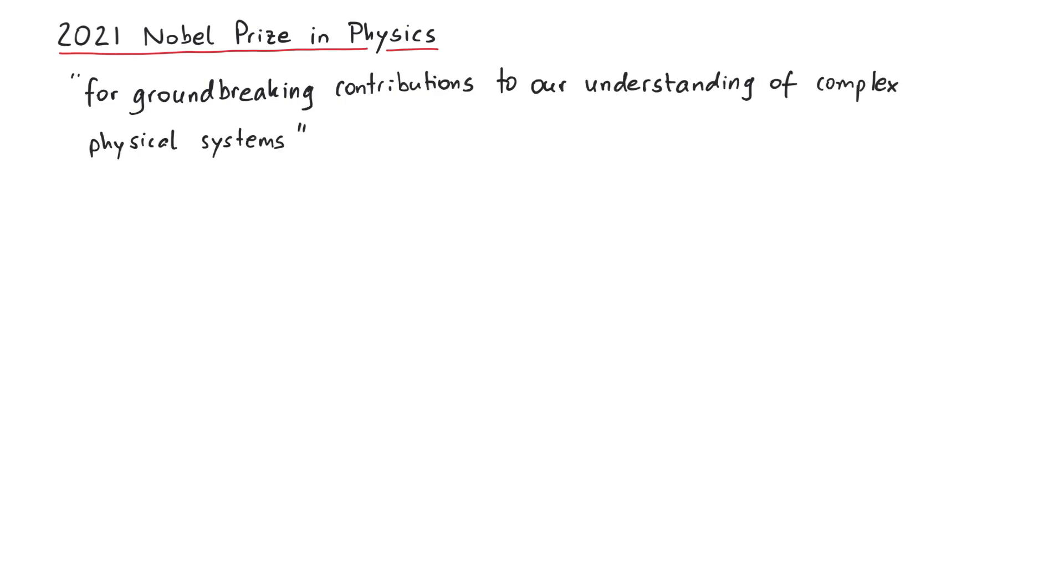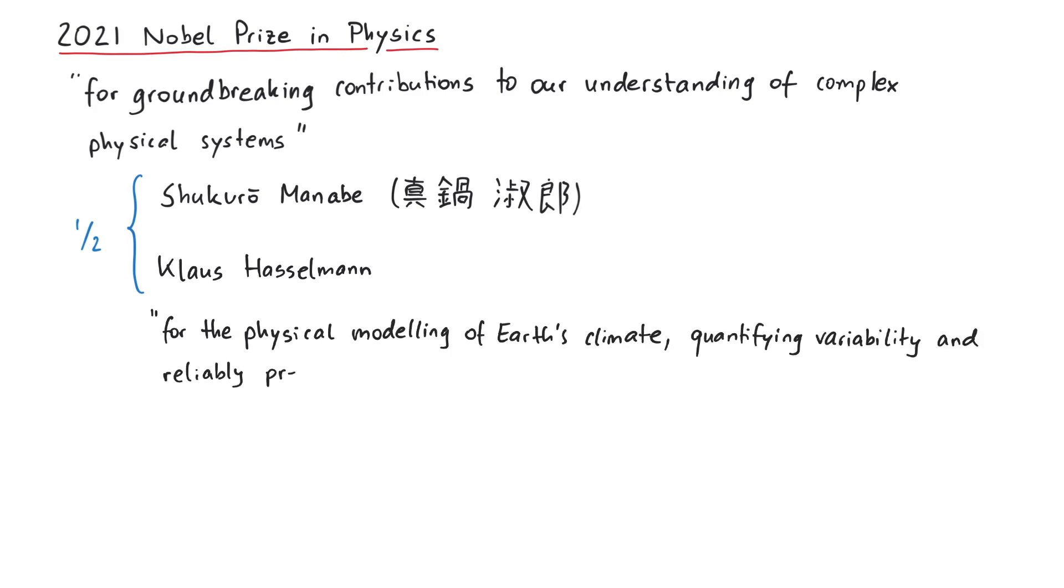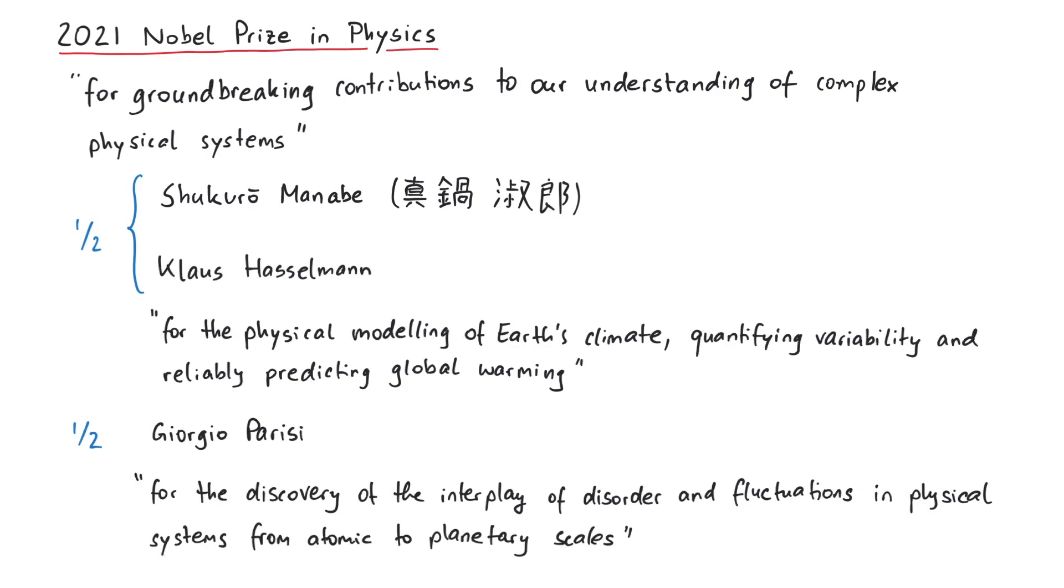On October 5th, 2021, the Royal Swedish Academy of Sciences decided to award the Nobel Prize in Physics for groundbreaking contributions to our understanding of complex physical systems, with one half jointly to Shukuro Manabe and Klaus Hasselmann for the physical modeling of Earth's climate, quantifying variability and reliably predicting global warming, and the other half to Giorgio Parisi for the discovery of the interplay of disorder and fluctuations in physical systems from atomic to planetary scales.